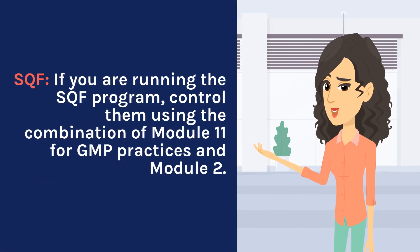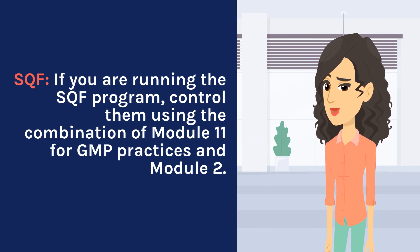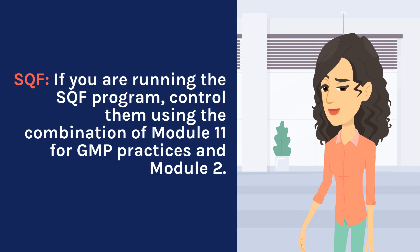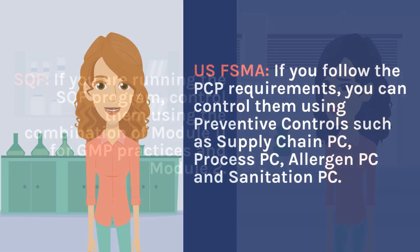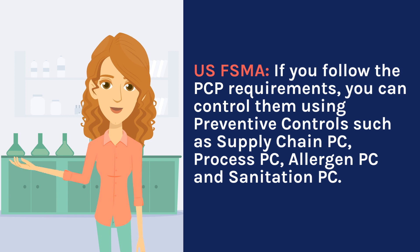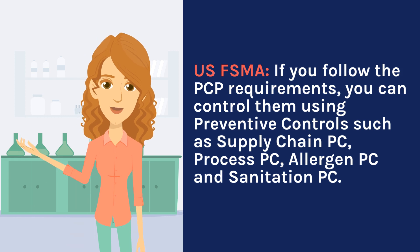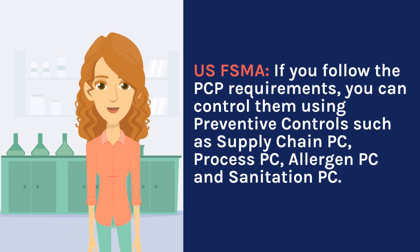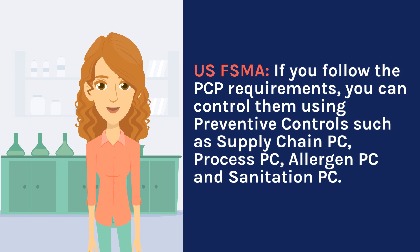If you are running the SQF program, control them using the combination of Module 11 for GMP practices and Module 2. If you follow the FSMA PCP requirements, you can control them using preventive controls such as supply chain PC, process PC, allergen PC, and sanitation PC.